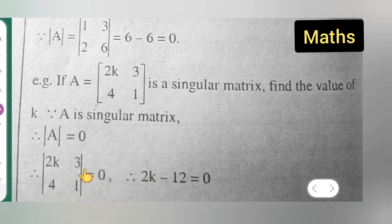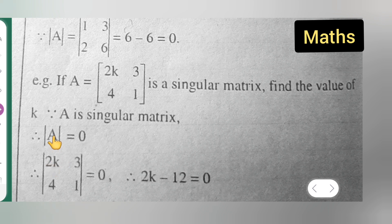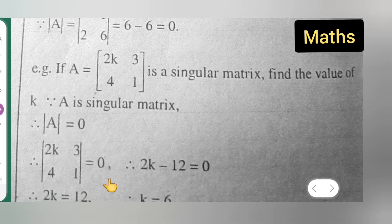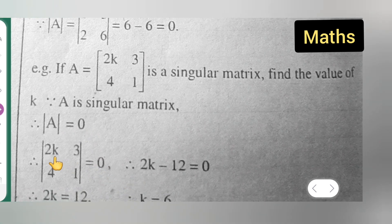So what we have to do is, put the determinant. What is A over here? 2k, 3, 4 and 1. |2k, 3; 4, 1| is equal to 0. Now therefore, you take the determinant: 2k × 1 will be 2k minus 4 × 3 is 12, which is equal to 0.